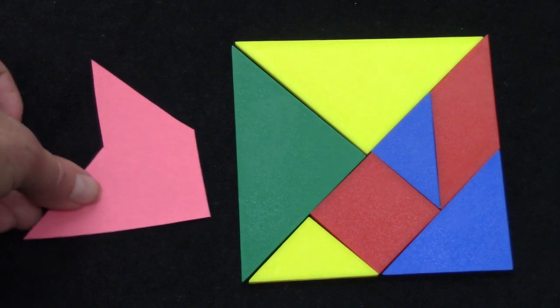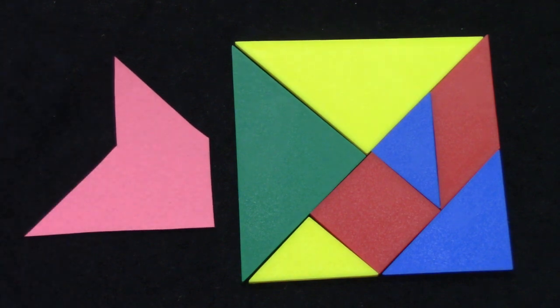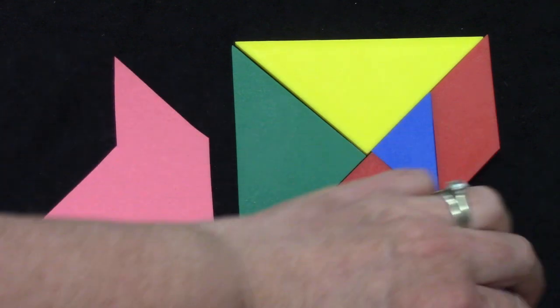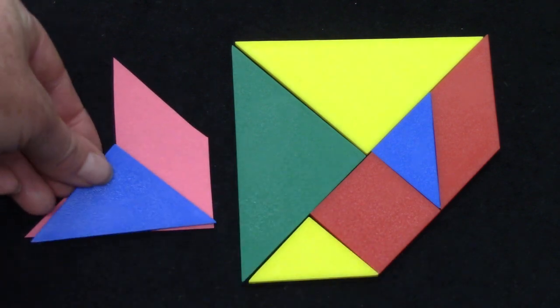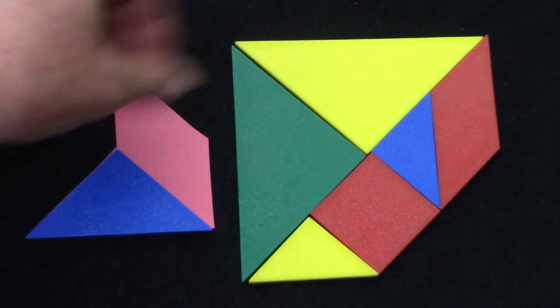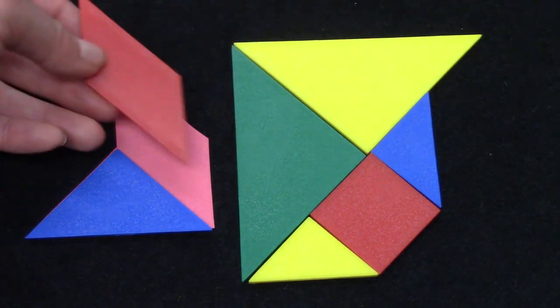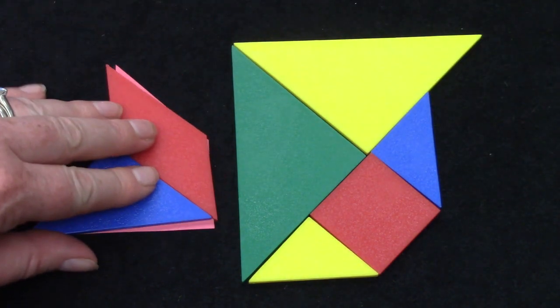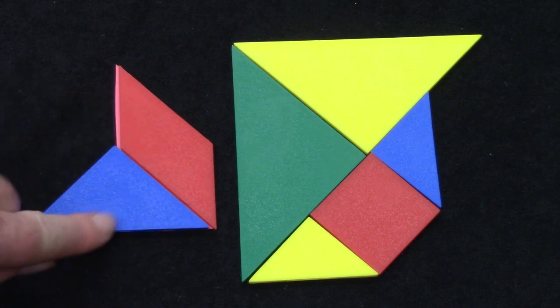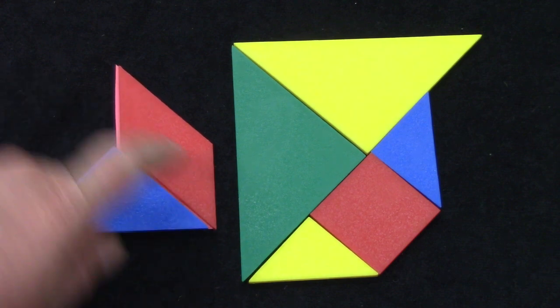The first shape that we are going to cover is this shape. There's probably more than one way that we could cover this design. But I am going to start off by covering it with two pieces. Let's see. I can cover this design with the triangle and the parallelogram.